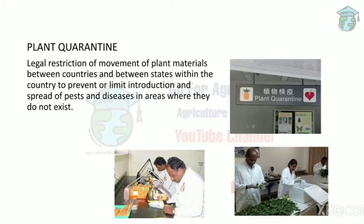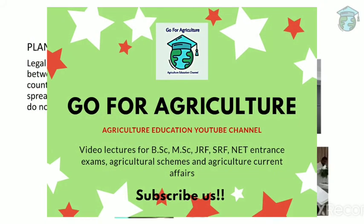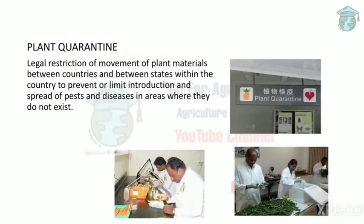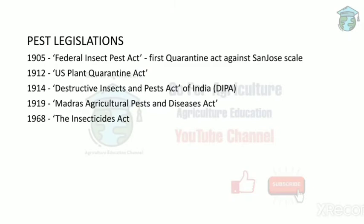If a country wants to introduce a new plant variety — for example, a plant native to Australia being introduced into India — there are legal restrictions. Australia must provide proof stating that the plant has no pest, meaning the plant is clean. To exchange plant materials between countries, they must provide this proof. This is planned quarantine.